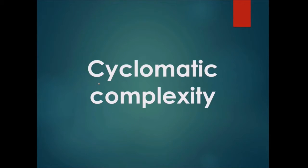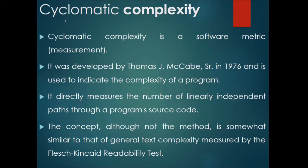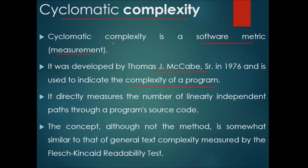Cyclomatic complexity is a software metric used for measurement. It was developed by Thomas McCabe in 1976 and is used to indicate the complexity of a program. It directly measures the number of linearly independent paths through a program or source code.